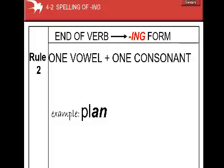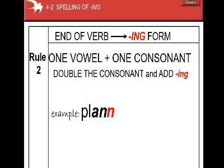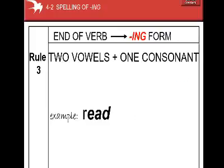Example: 'plan' — one vowel, one consonant. Double the consonant and add ING: planning. Rule number three: two vowels plus one consonant.